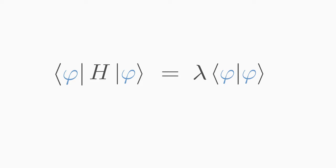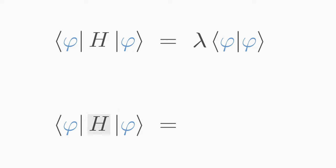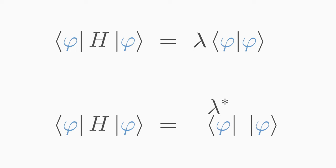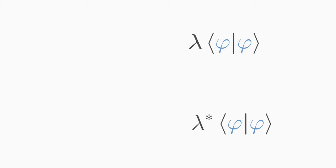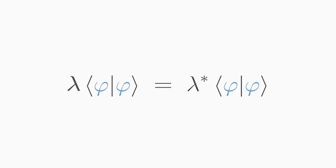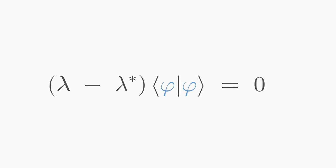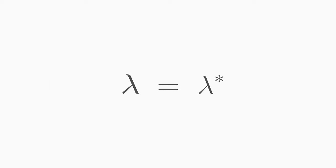We may pull out the eigenvalue from the scalar product, because it is just a number. Now we apply the property that defines the Hermitian operator — we can apply H to the bra-vector instead, and the scalar product remains the same. H applied to the bra-vector yields the complex conjugate eigenvalue, lambda star. If we equate both versions, bring everything to one side, and factor out the scalar product phi with phi, then we find that lambda must equal lambda star. The eigenvalue lambda is therefore real.